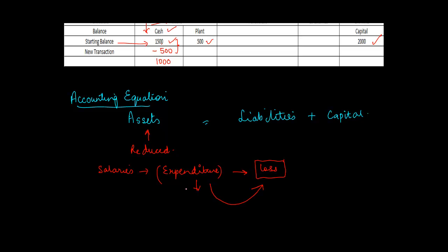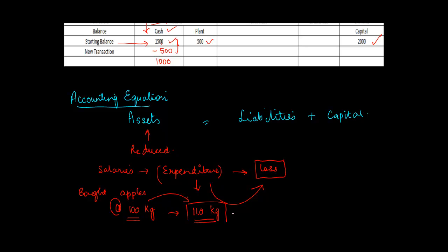Let me give you an example. Say you bought apples at 100 a kg and sold them at 110 a kg. The payment you make is reduced from the income that you get — 110 minus 100 is 10, so 10 is your profit. But if there was no income, you would say you incurred a loss of 100 rupees. Similarly, salaries is an expenditure and an expenditure increases the loss.